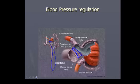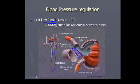The juxtaglomerular apparatus can secrete a certain compound. What it secretes when there is low blood pressure is a compound called renin.